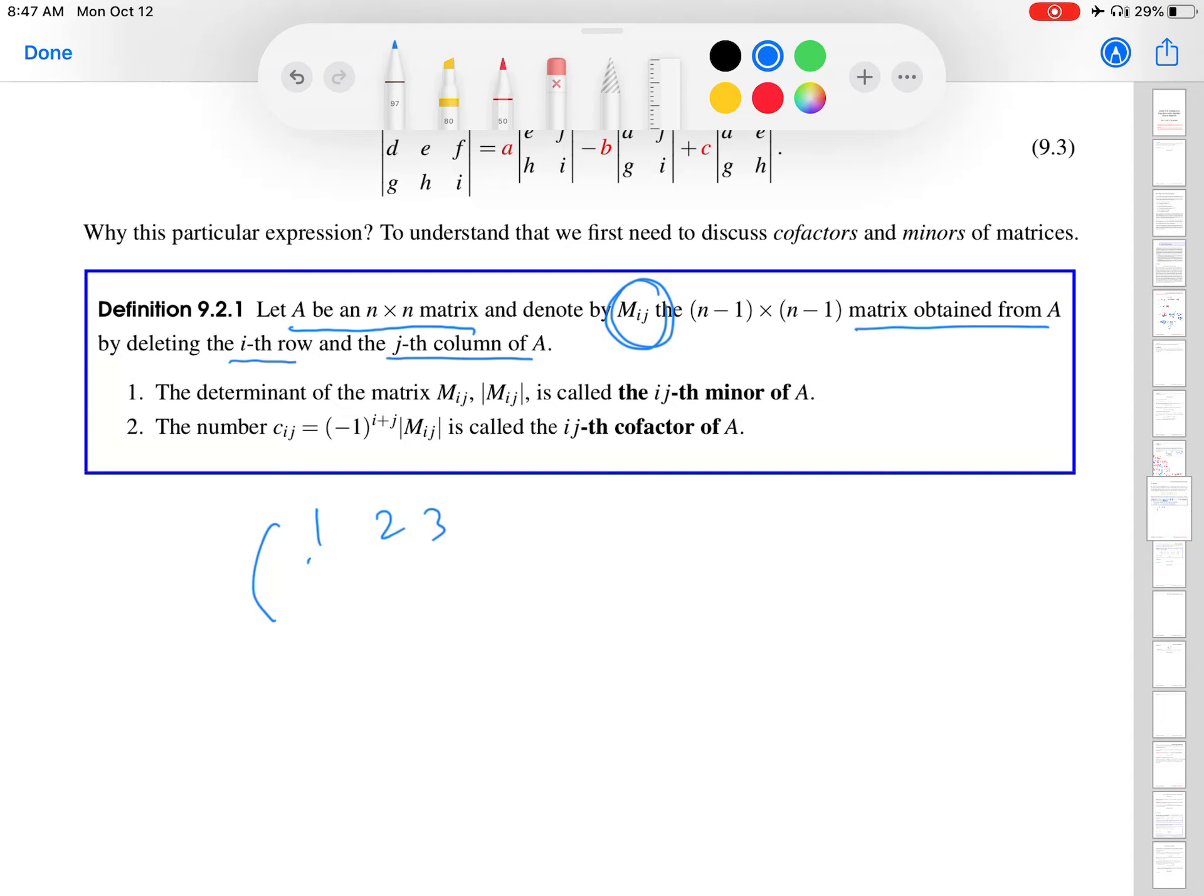So what if I have 1, 2, 3, 4, 5, 6, 7, 8, 9? Okay, let's say that's my matrix A. What would be M23? So this would be the matrix obtained by deleting the second row and the third column.